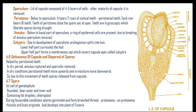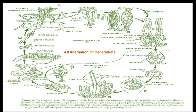The spore is the first cell of the gametophyte. It is rounded with an outer and inner wall containing fat droplets and chloroplasts. During favorable conditions, spores germinate and form branched threads called protonema. On the protonema there is development of rhizoids and buds. Buds develop into the plant of Funaria.